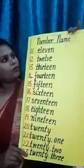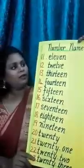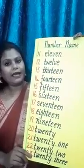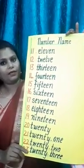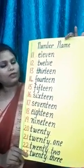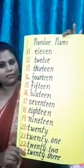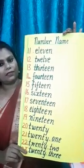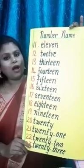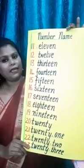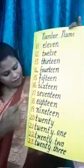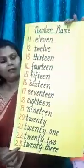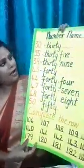Now you will be learning number names from 11 to 50. 11, 12, 13, 14, 15, 16. You have the number names right till 23 at this chart. I am turning it over.